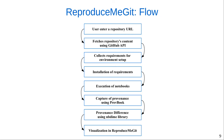ReproduceMeGit provides a user interface where users can enter a repository URL and reproduce Jupyter notebooks using a reproduce button. The tool fetches the content of the repository using the GitHub API, processes the repository, and scans it for Jupyter notebooks. It then loads the notebook and extracts information on the structure, cells, modules, and more. To execute these notebooks, the requirements for the environment setup are collected and installed. After setting up the environment, the notebooks are executed. Supported by ProveBook, ReproduceMeGit captures and stores the provenance information of the execution. We use the nbdime tool provided by Project Jupyter to calculate the difference between the two executions, and the analysis on the reproducibility study of the repository is then visualized in ReproduceMeGit.